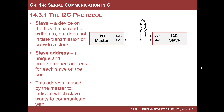A slave is a device that is going to be read or written to in a given transaction. The master is what generates the clock — the slave does not generate the clock. A key concept of I2C is that a slave has a unique address, and it's predetermined. These addresses are usually hard-coded into the circuit itself.